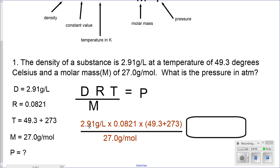Let's look at the values. 2.91 grams per liter times 0.0821 times 49.3 plus 273, which gives me 322.3, all of this divided by 27 grams per mole. When I plug in those values, my answer is 2.85 atm.